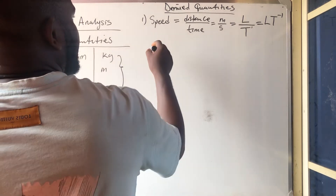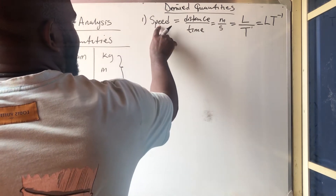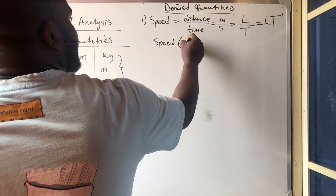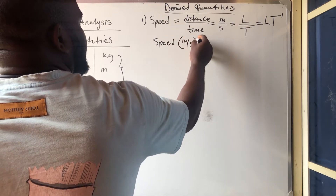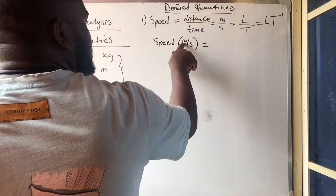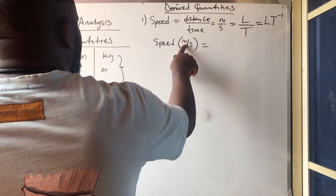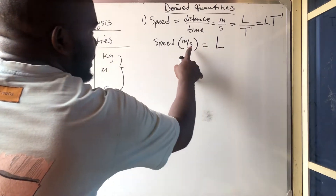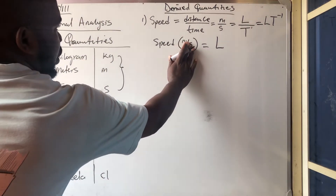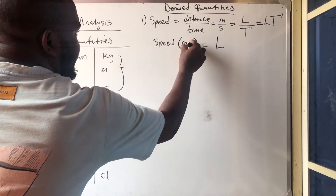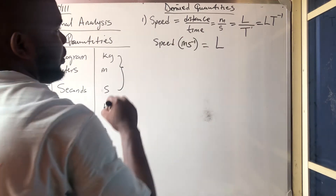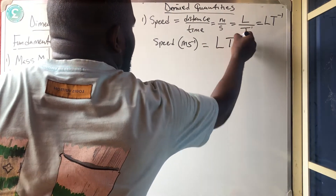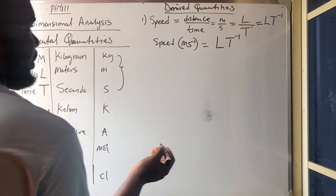Another way to get it: if you know the SI unit of speed is meter per second, then meter gives you length (L), and per second gives you T raised to power minus 1. So you get LT⁻¹ as simple as that.